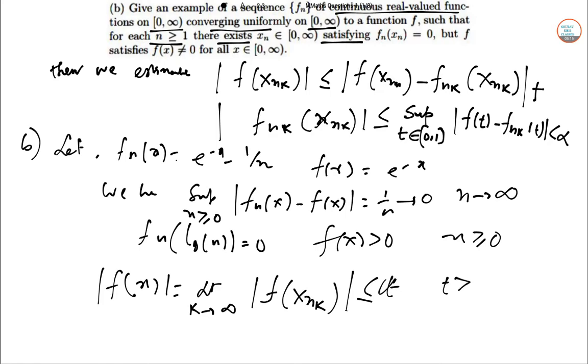As alpha greater than 0 is an arbitrary constant over here. So we can deduce that Fx has to be 0. So second part is done. Now we move to question number 2.